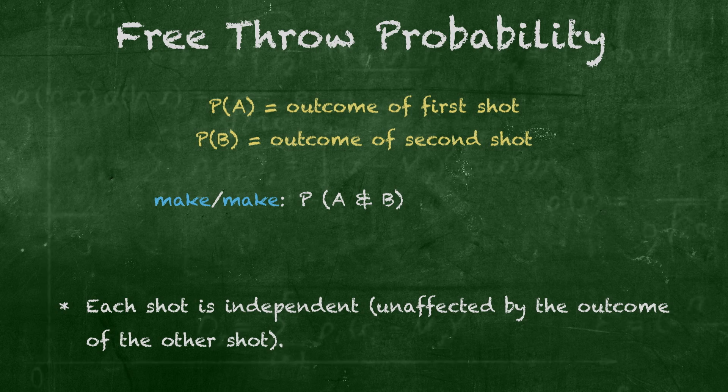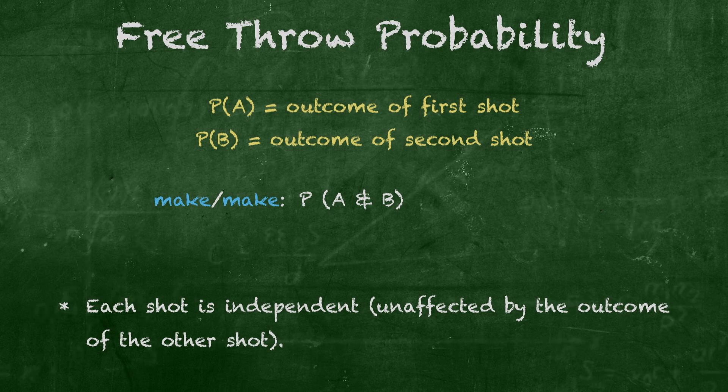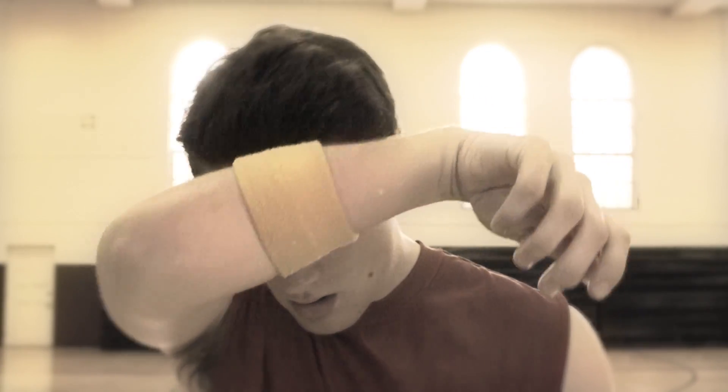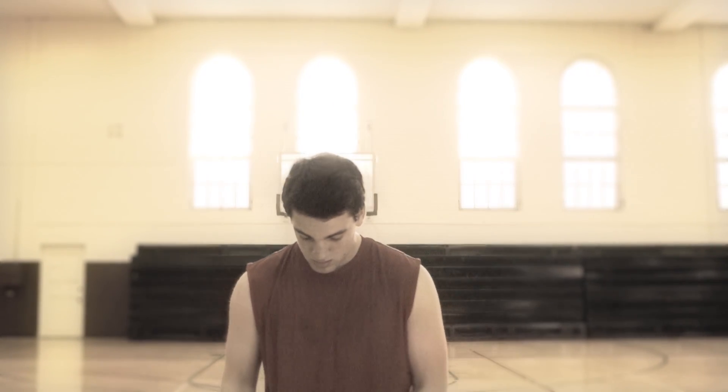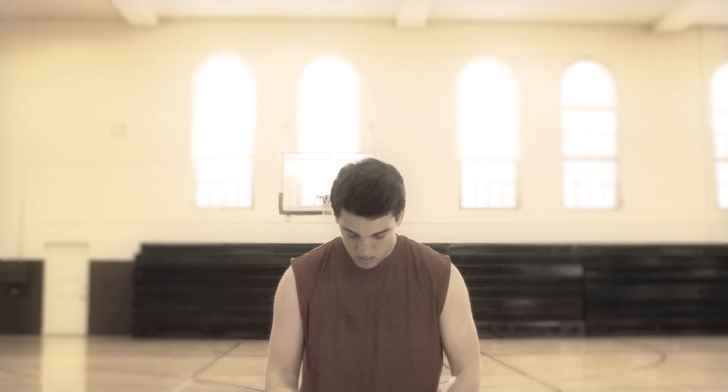Now, this isn't exactly realistic, because we clearly know that any player at the line is going to have knowledge of their prior shot, meaning he'll have even more pressure to make the second if he missed the first. In a close game, each shot is the difference between a big W and... But for our purposes, let's assume that each shot is an independent event.